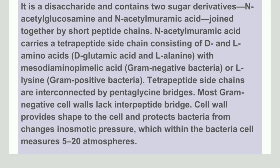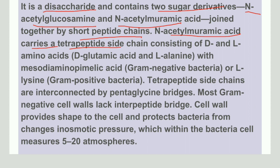The cell wall is made up of disaccharides — two sugar derivatives: N-acetyl glucosamine and N-acetylmuramic acid. These two sugar derivatives are joined together by a short peptide chain. The N-acetylmuramic acid carries a tetrapeptide side chain consisting of D-glutamic acid and L-alanine. In Gram-negative bacteria, they also have mesodiaminopimelic acid, while Gram-positive bacteria have L-lysine. The tetrapeptide side chains are interconnected by pentaglycine bridges.